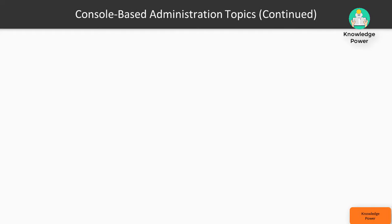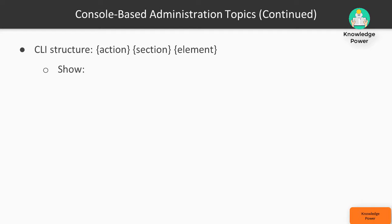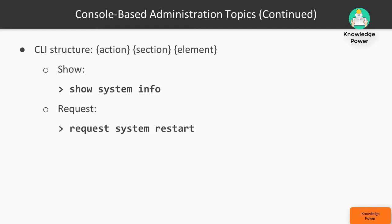In PanOS 8 console, we need to get familiar with the CLI structure. It's basically the same as any other network device — you have the action, the section that action is applied to, and the element inside the section. So very simple: action, section, element. In this case: show (action), system (section), info (element). We're going to look at show commands — how they help us find information inside the firewall — and request, which instructs the Palo Alto to perform a command execution such as a system reboot.